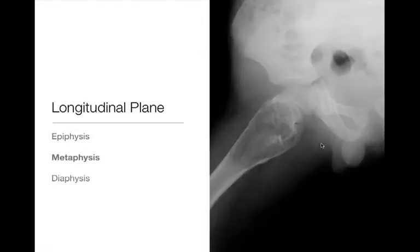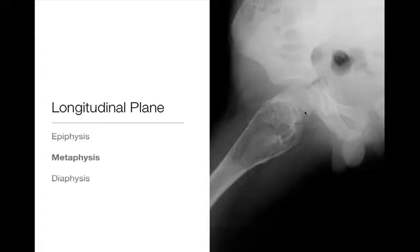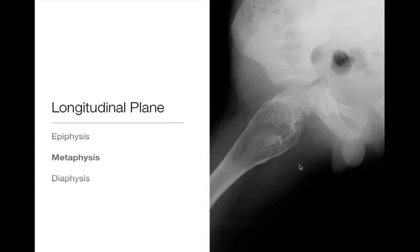Next up is the metaphysis. Here we have a geographic lytic lesion with a non-sclerotic border and narrow zone of transition, centered in the metaphysis and somewhat into the diaphysis of the proximal femur. This is a child, so we have a clear epiphysis, unfused growth plate, and the metaphyseal lesion itself. Note it has a fracture through it — here's the pathological fracture and the fragment — creating the fallen fragment sign, which is classic and pathognomonic for a unicameral or solitary bone cyst. These tend to be metaphyseal or diaphyseal-based lesions centered in long bones.